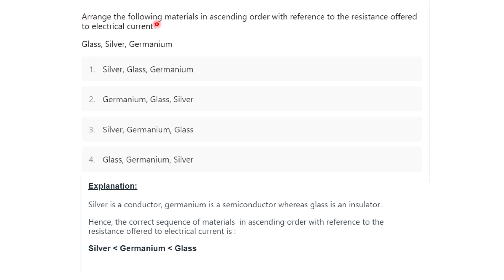Next question: arrange the following materials in ascending order with reference to their resistance to electric current — glass, silver, and germanium. Silver is a conductor, germanium is a semiconductor, and glass is an insulator. Arranging in ascending order of resistance: first silver, then germanium, then glass. So the correct option is C.